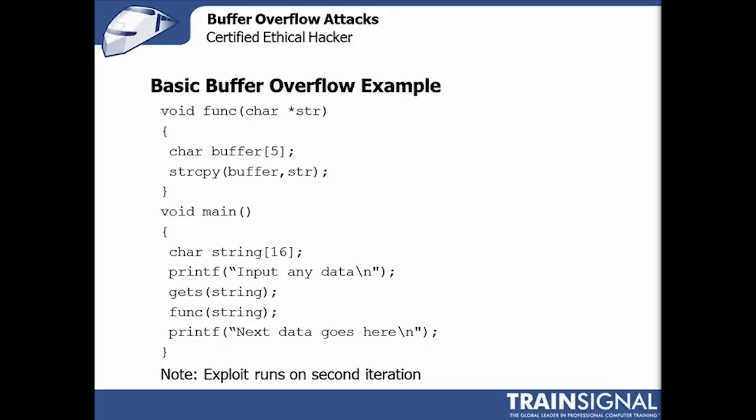Here's a really basic version of buffer overflow as code. All it's showing you is that I've got a couple of different variables, but they don't have any coordination between the size of them — between the actual size of data that's stored in these variables, in these buffers. There's no checking to make sure this string is too long or this buffer is too small. Because there's no checking of the buffer size, if I stick too much data in one, it can actually make the other one blow up.